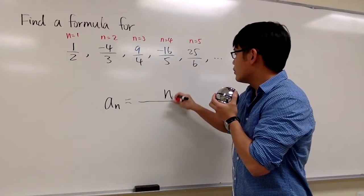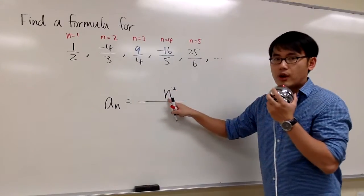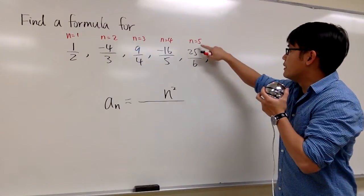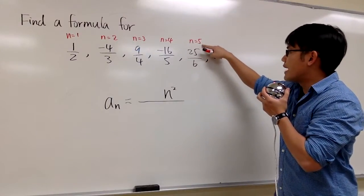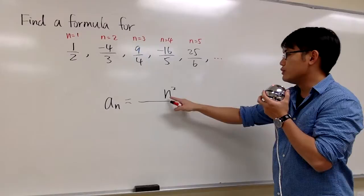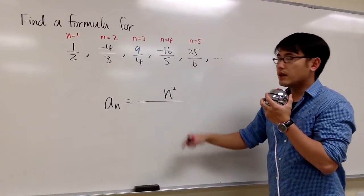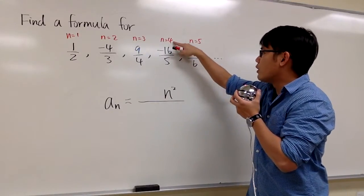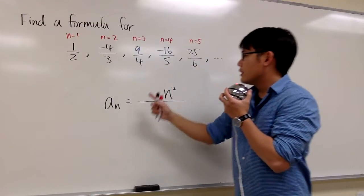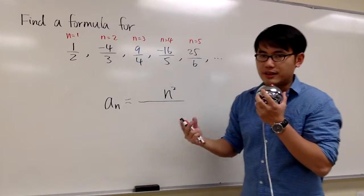As we mentioned, we are going to have n² to get the value. For example, the fifth term when n equals 5, to get 25 we just need to do 5², that's 25. Likewise, if n equals 4, 4² gives us 16.